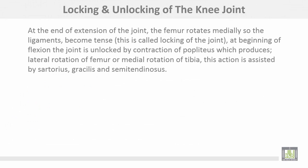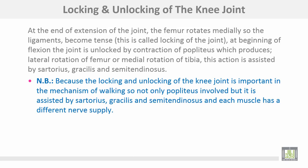Locking and unlocking of the knee joint: at the end of extension of the joint, the femur rotates medially, so the ligaments become tense — this is called locking of the joint. At the beginning of flexion, the joint is unlocked by contraction of the popliteus muscle, which produces lateral rotation of the femur or medial rotation of the tibia. This action is assisted by sartorius, gracilis, and semitendinosus. Because the locking and unlocking of the knee joint is important in the mechanism of walking, not only popliteus is involved, but it is assisted by sartorius, gracilis, and semitendinosus, and each muscle has a different nerve supply.